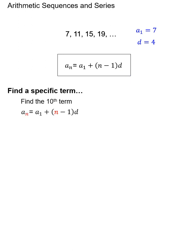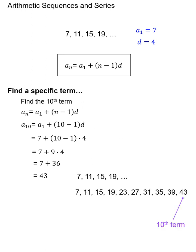Plugging in for n the term that we want, if we want the 10th term put a 10 where n is and do the math. We know the a₁ and d from this just by looking at the sequence, and if you do all the PEMDAS you'll find out that the 10th term is 43. By the way it shouldn't be surprising if we actually wrote it out. The 10th term would be 43, so you could have avoided some algebra there if you wanted to.